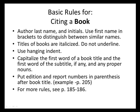Basic rules for citing a book: we use the basic format of the author's last name and initials. If authors have similar last names and initials, you can use the first name in brackets to distinguish the authors. Within the citation, we italicize the title of the book — underlines are not used in APA. Capitalize the first word of a book title, the first word of the subtitle, and any proper nouns. Put the edition and report numbers in parentheses after the book title. You can see more rules on pages 185 and 186.